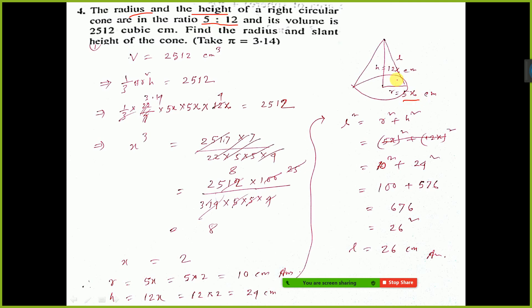See, here I have considered radius 5x, height 12x. So, one thing you should write: let radius equal to this, let height equal to this. You should write this thing.